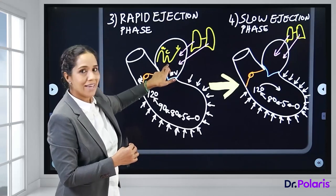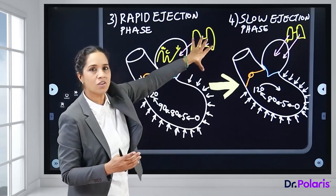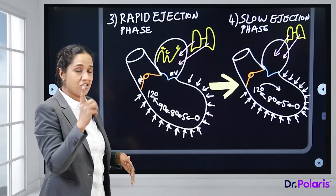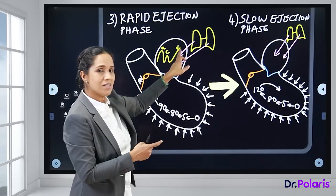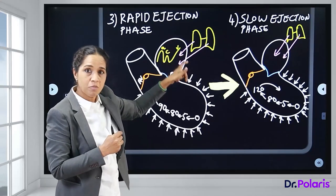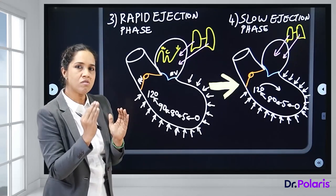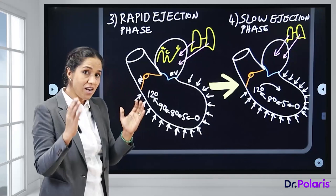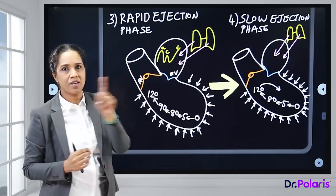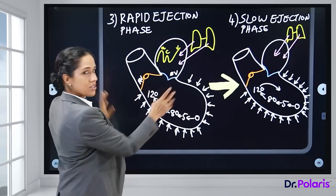In the atria during the rapid ejection phase, oxygenated blood from the lungs continues filling the atria (diastole), producing the third positive wave — the V wave — in the jugular venous pulse. This occurs because the filling atria gradually increases atrial pressure, recorded as the V wave.